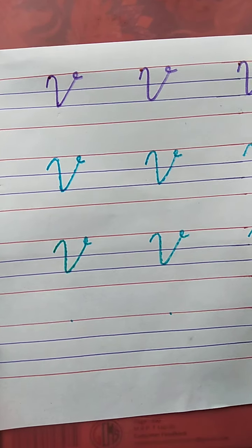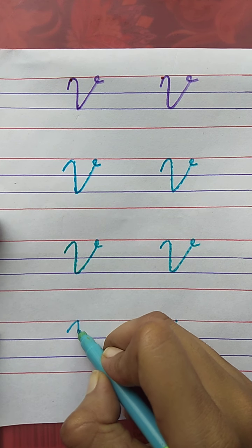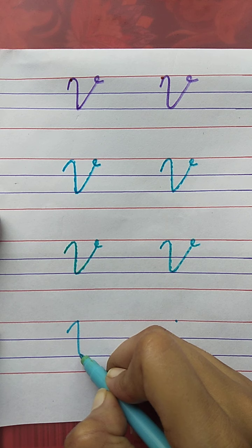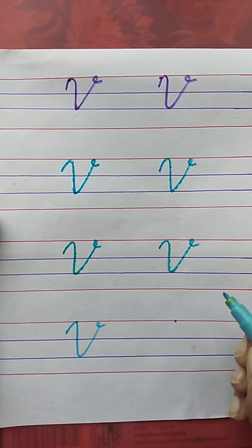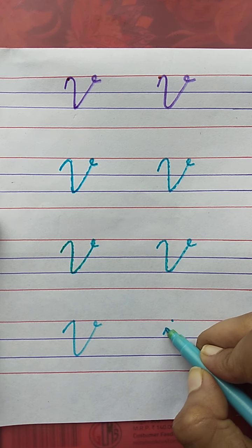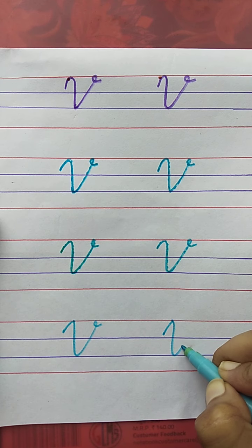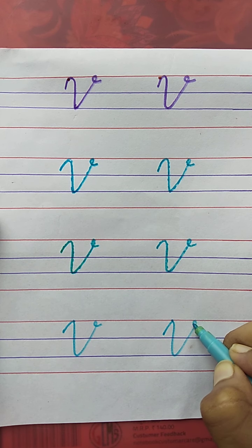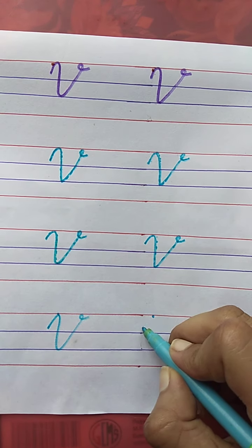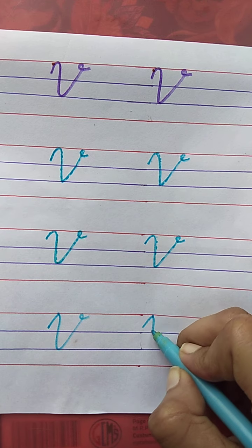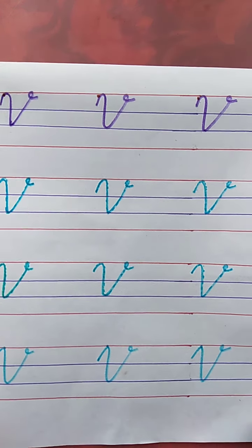Now you have to write. Without tracing. Draw with me: curve, slanting line, one more slanting line, and a loop. One more time: curve, slanting line, one more slanting line, and a loop. Last one: curve, slanting line, one more slanting line, and a loop.